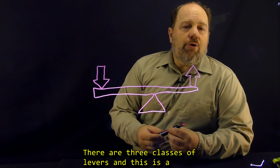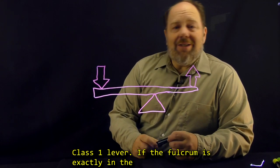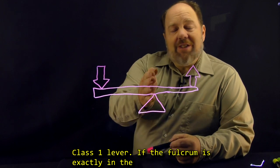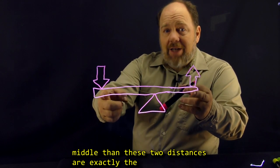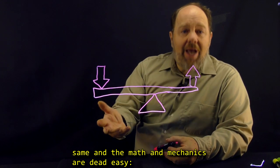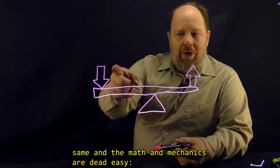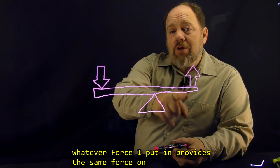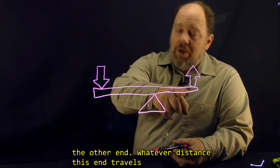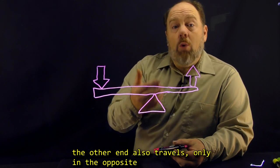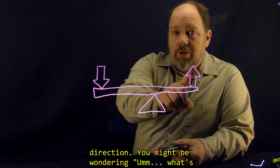There are three classes of levers, and this is a class 1 lever. If the fulcrum is exactly in the middle, then these two distances are exactly the same, and the math mechanics are dead easy. Whatever force I put in provides the same force on the other end. Whatever distance this end travels, the other end also travels, only in the opposite direction.